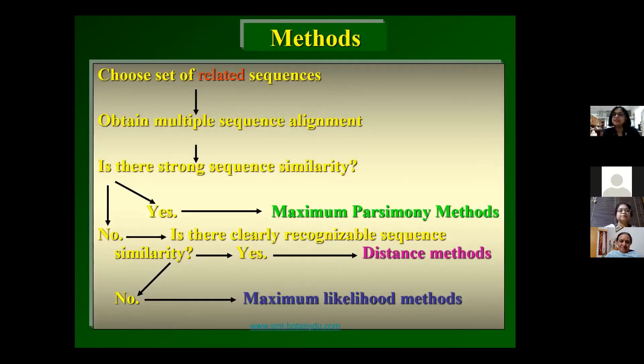You now have a FASTA file made up of all the sequences of functional actin genes in Arabidopsis, and you want to understand how they are related. You need to do what is called a multiple sequence alignment. Your FASTA file has to have members of the same gene family. There are three major philosophies of doing multiple sequence alignment: maximum parsimony, distance methods, and maximum likelihood.